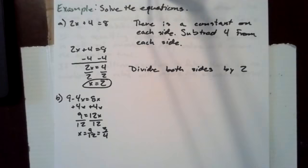For example, solve these equations. 2x plus 4 equals 8. There is a constant on each side, so we will subtract 4 from each side to get all constants on the same side. If we subtract 4 from 2x plus 4, we have 2x. And if we subtract 4 from 8, we have 4. So 2x equals 4. Then we divide both sides by 2 and get x equals 2.